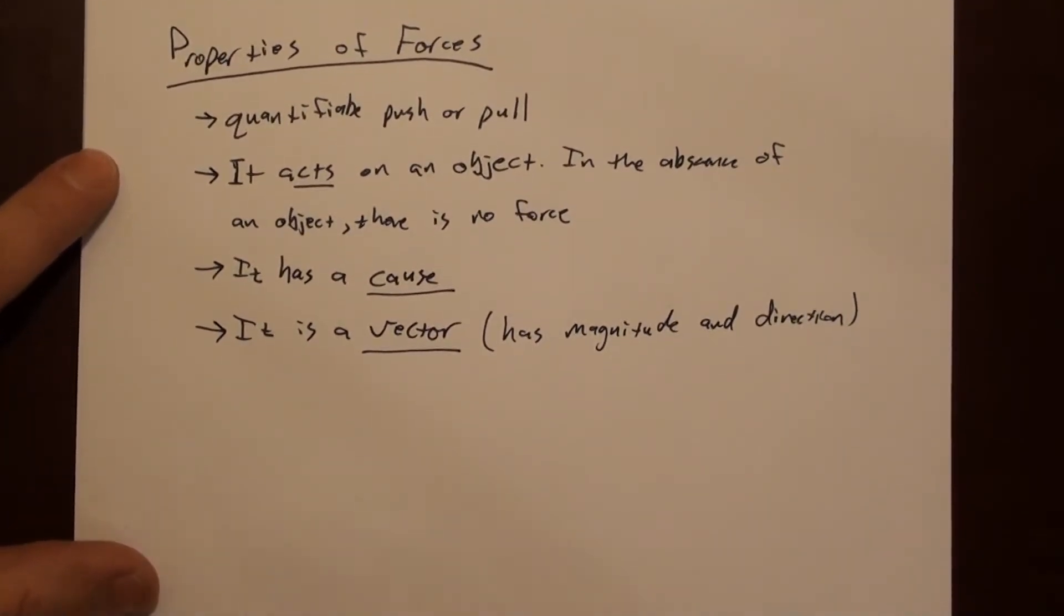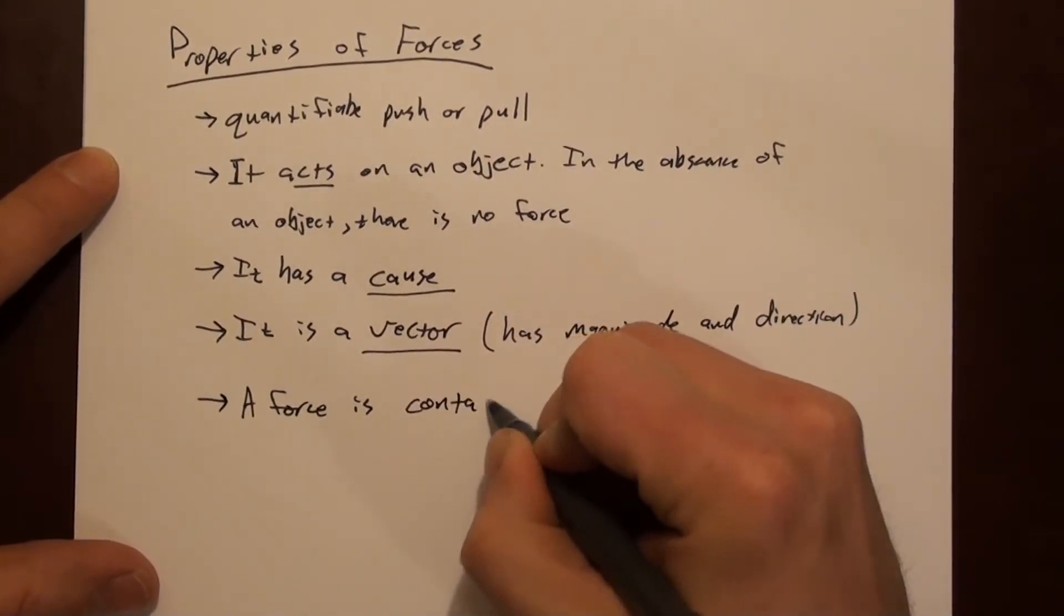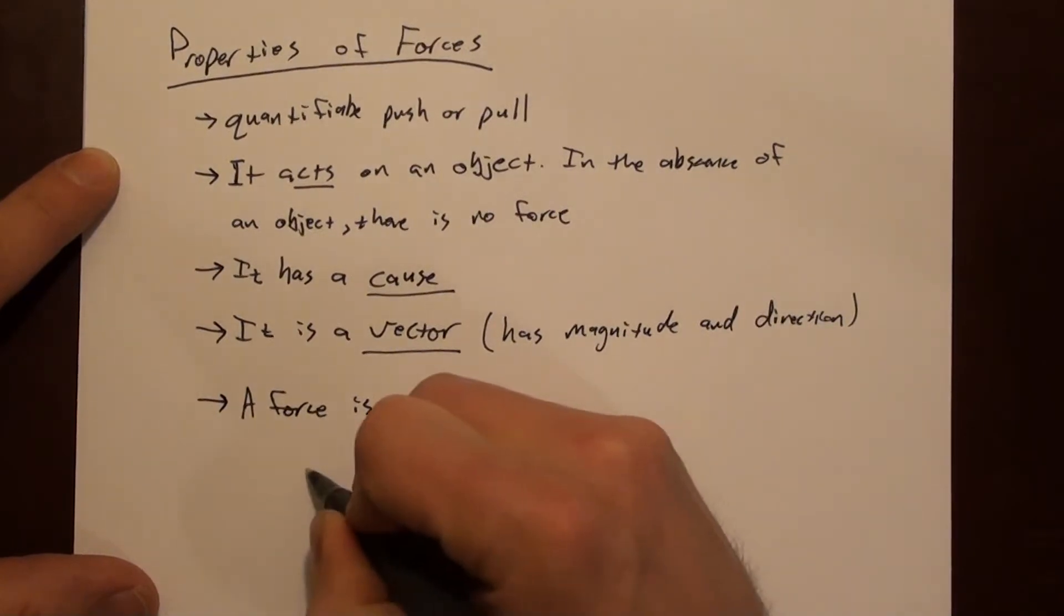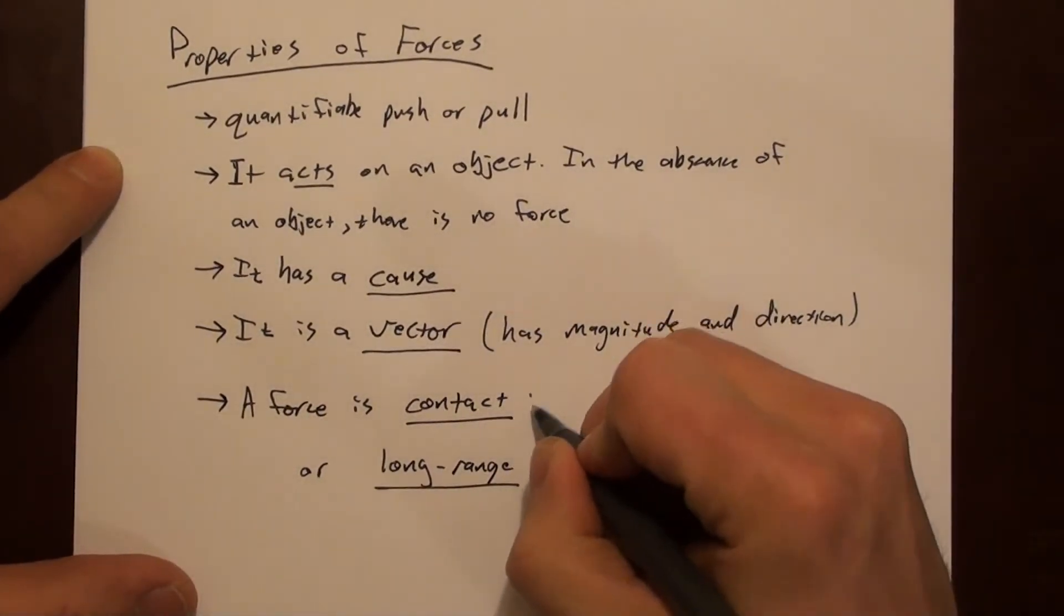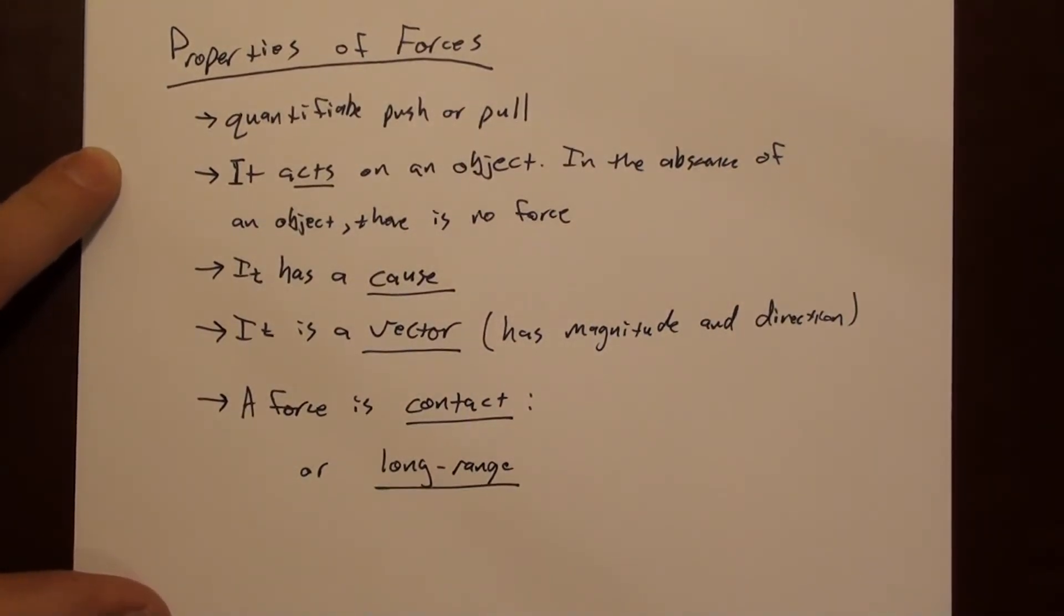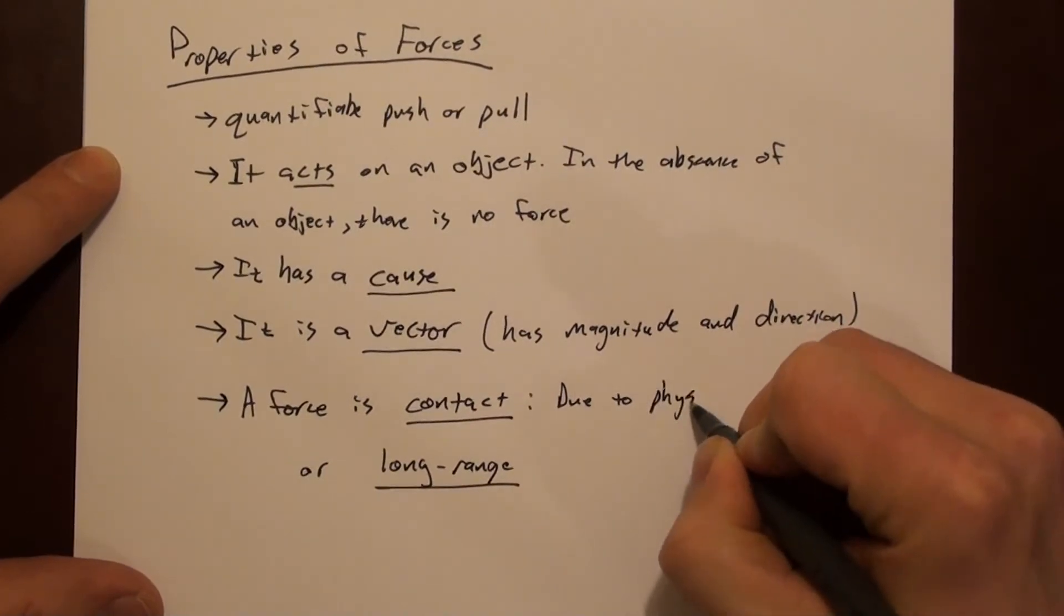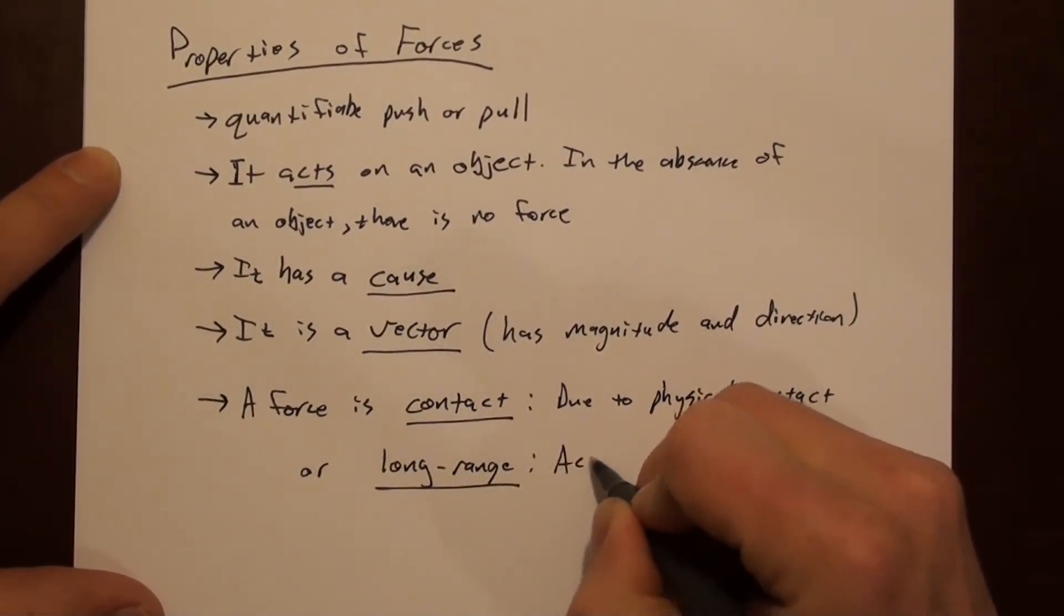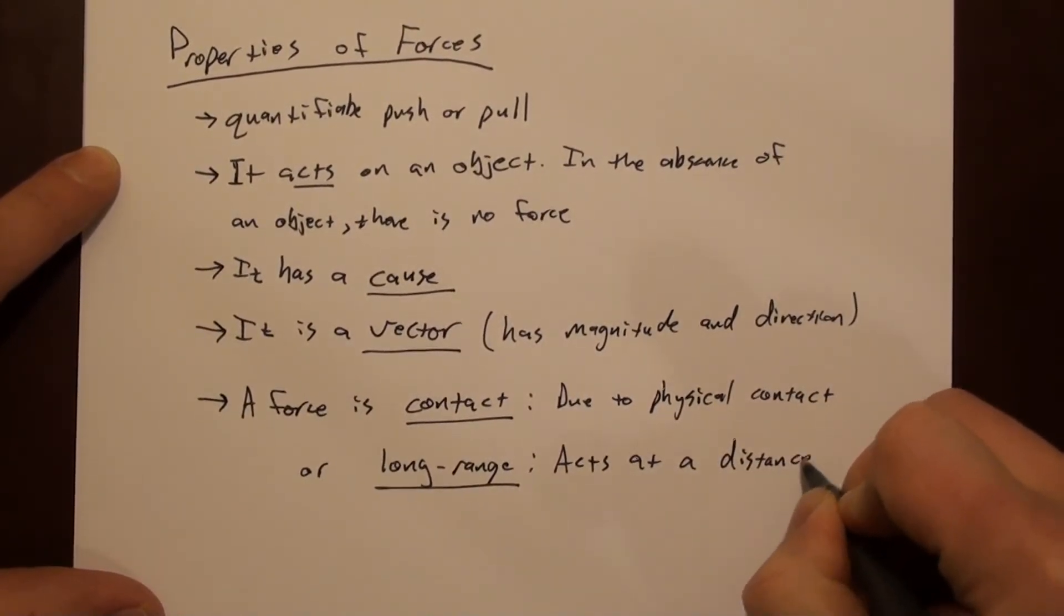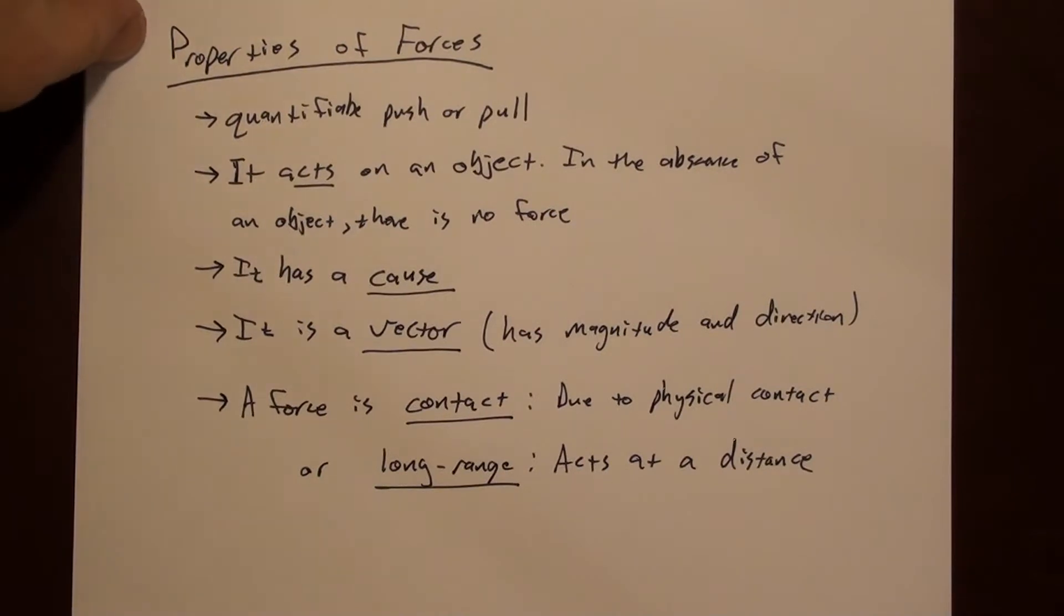And finally, we can break forces into two classes. A force is contact or long range. A contact force is a force due to a physical contact, a force due to one thing touching another thing. And a long range force is a force that acts at a distance.